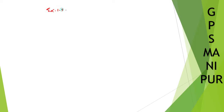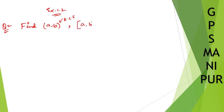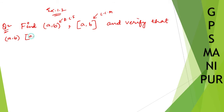Now we are doing Exercise 1.2, question number 2. Find HCF(a, b) and LCM(a, b), and verify that HCF(a, b) into LCM(a, b) is equal to a into b, for each of the following integers.